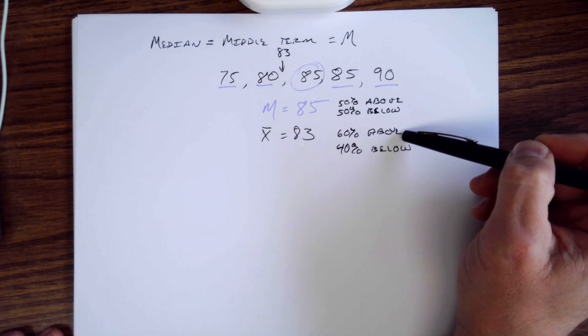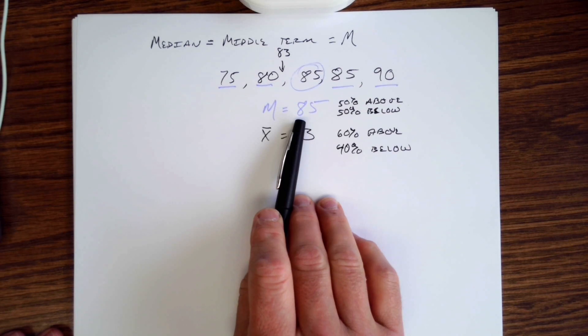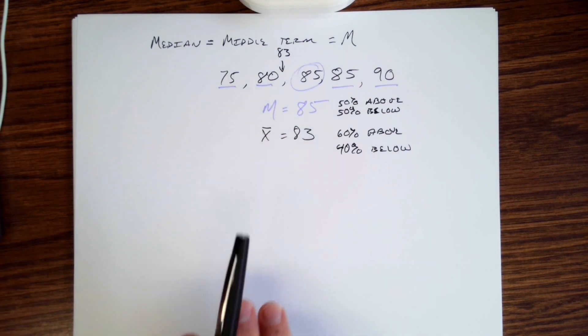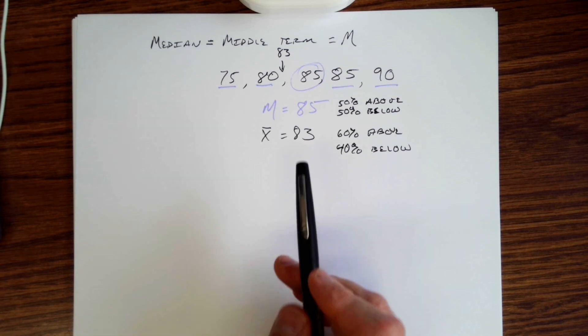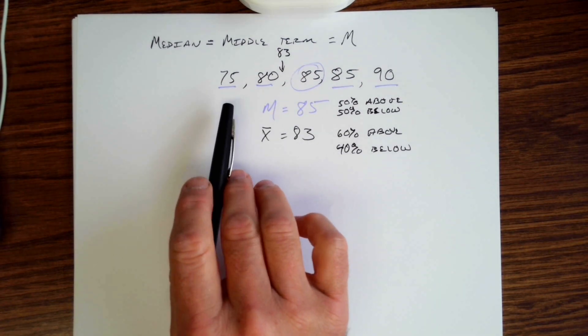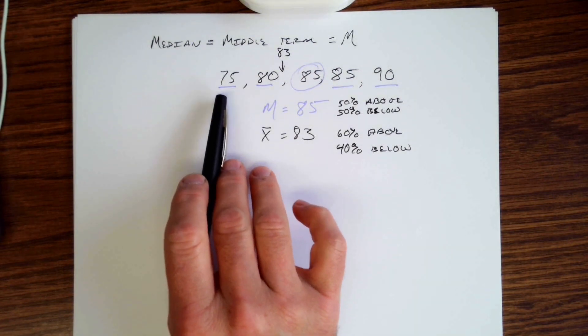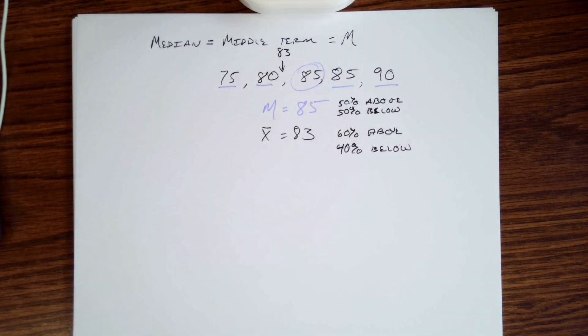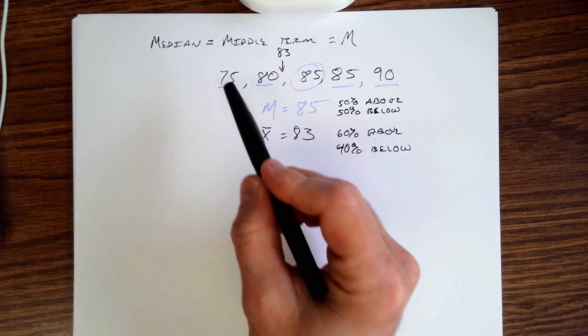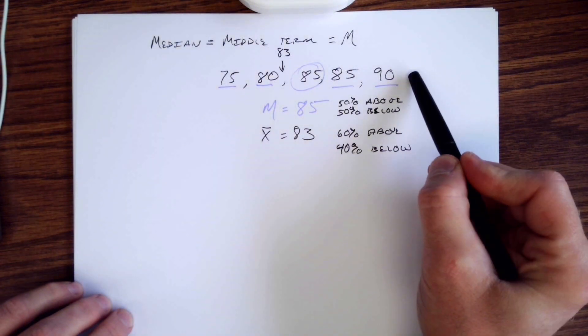Which one of these is the better indicator of the data you have? 85, which is the median, or 83? Now if you're talking about your grades, well 85 might be a better indicator because, oh, it's higher so it's going to be a better grade. But what if this were switched? What if, in this particular instance, instead of 75 being the low grade, what if it was a 95 was the high grade? What would happen there?